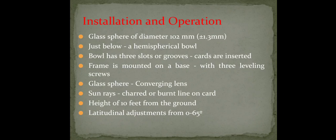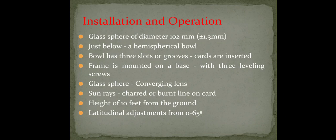The diameter of the glass sphere is around 102 millimeters, with a variation of 1.3 mm allowed. Just below the glass sphere there is a hemispherical bowl with three slots for three different cards. The device should be kept at 10 feet height from the ground level. Each hour a line marking will be there on the card, and the hour markings are also mentioned.